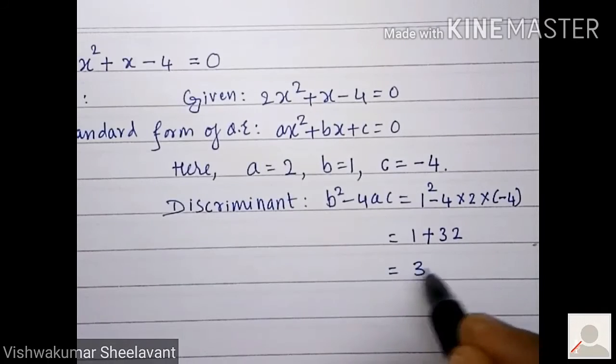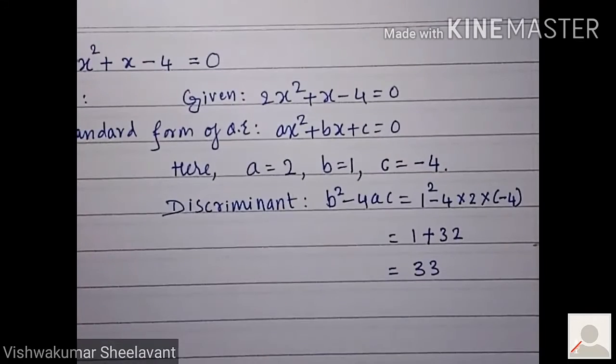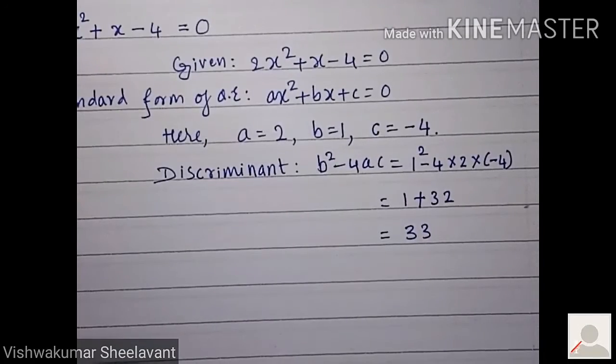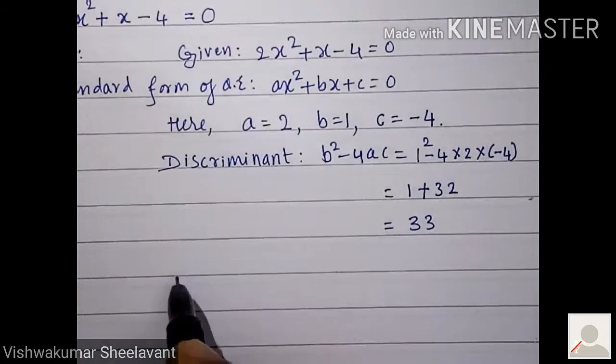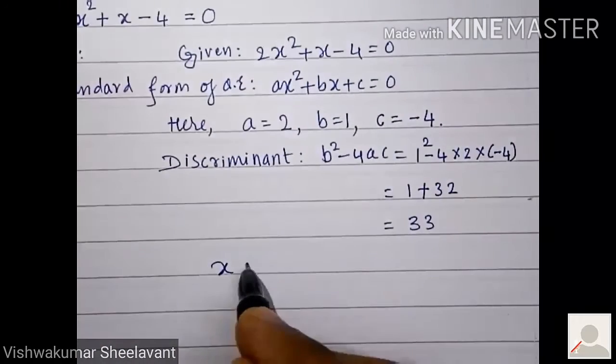So added, we will get plus 33. A positive number means real roots do exist, so we will use the quadratic formula.